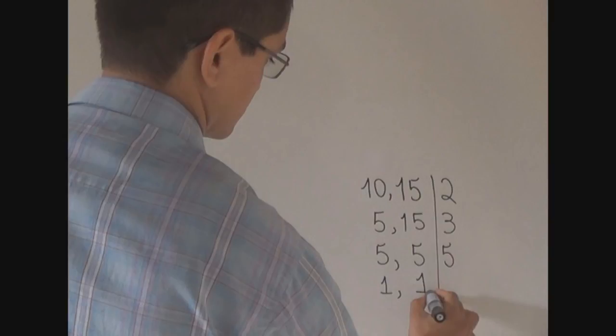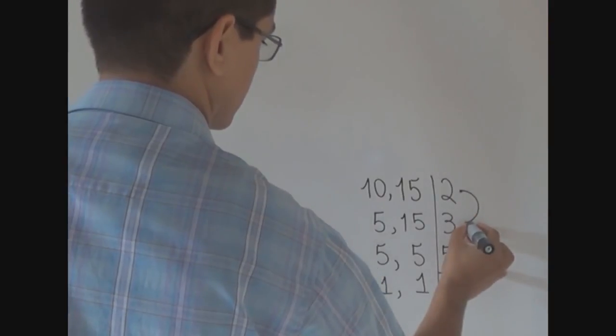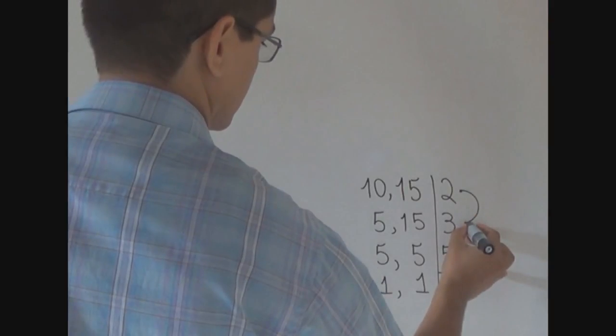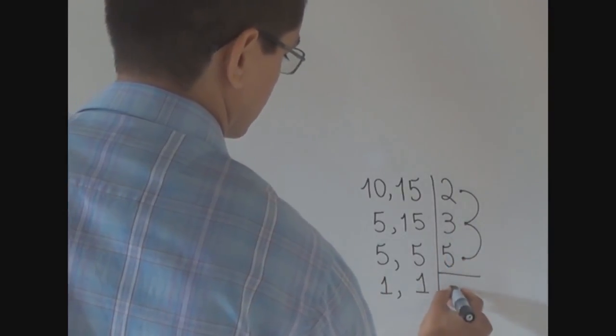Now, we just multiply the numbers we have on the right column. Let's do this. 2 times 3 equals 6. Keep 6 in mind. 6 times 5 equals 30.